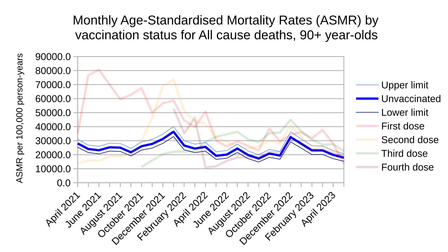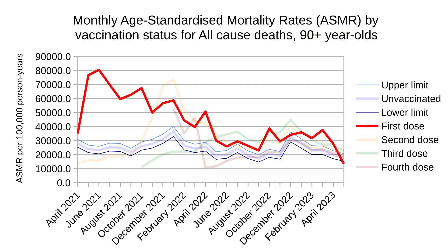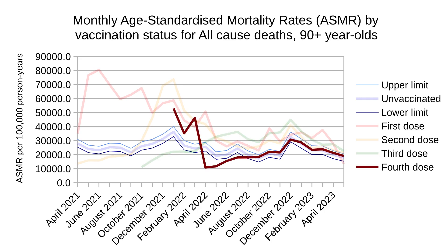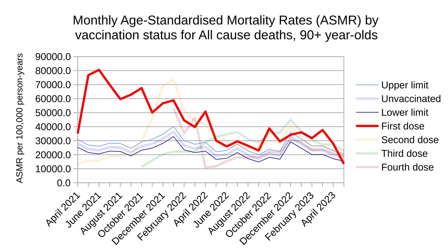Our final group: the UK's most senior citizens, 90 years old and above. First-dose recipients had an extremely high mortality rate in the beginning, peaking at around 80% death rate in June 2021. Second-dose recipients also had a similar peak, with a mortality rate over 70,000 per 100,000. Third-dose recipients started off well, but by mid-2022 were significantly worse than the control group, with fourth-dose individuals pretty much tracking the control group mortality. All-cause mortality for the control group remained pretty steady between 2021 and 2023, but that can't really be said for first and second dose.